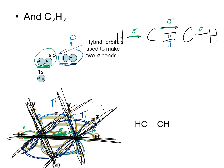This is why molecules are limited to a triple bond: the sigma bond occupies the direct space between the atoms, the first pi bond occupies above and below, and the second pi bond occupies the front and back. There is no more space to fit additional electrons between two atoms, so you cannot exceed a triple bond.